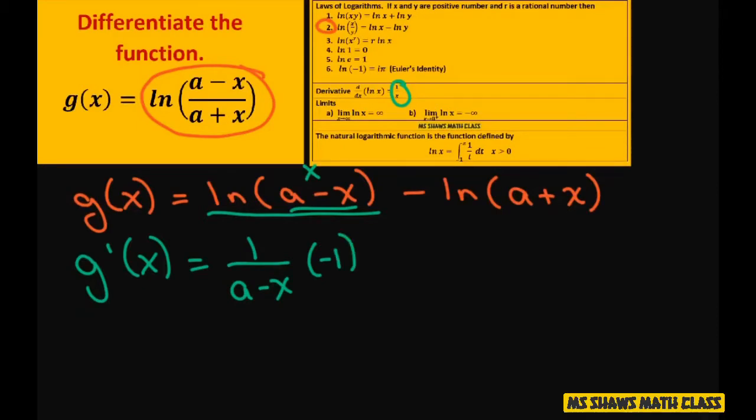And then put minus, same thing here, 1 divided by a plus x and the derivative of the inner function is 1, which we don't really need that part. So we do need the negative 1.